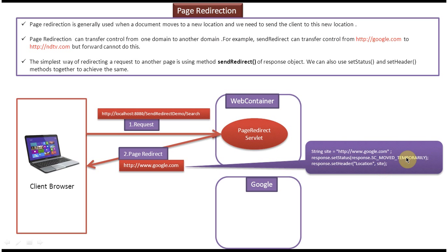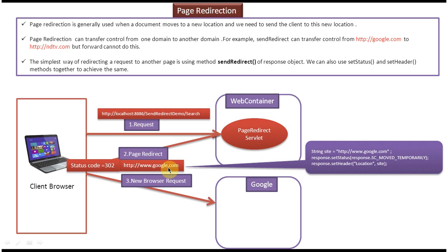The Location header value is google.com and the status code is set to 302. That response is sent to the client. When the client sees status code 302, it understands it has to redirect the request to the new location, which it reads from the Location header. So the client makes a new request to google.com, Google processes the request, and sends the response back to the client.